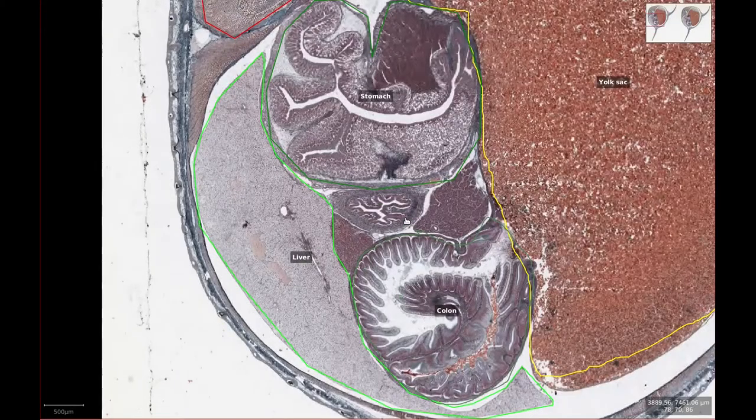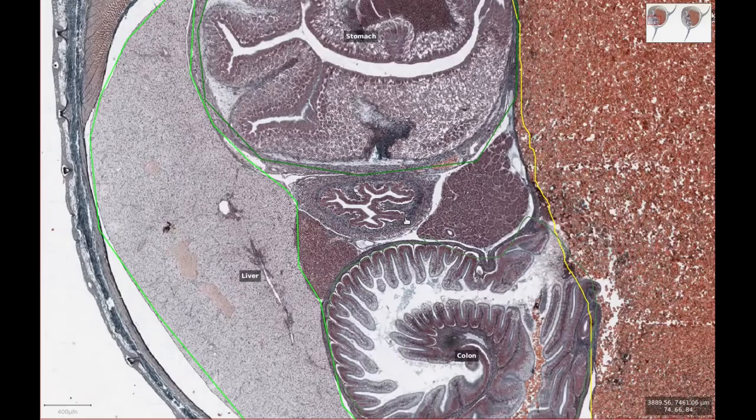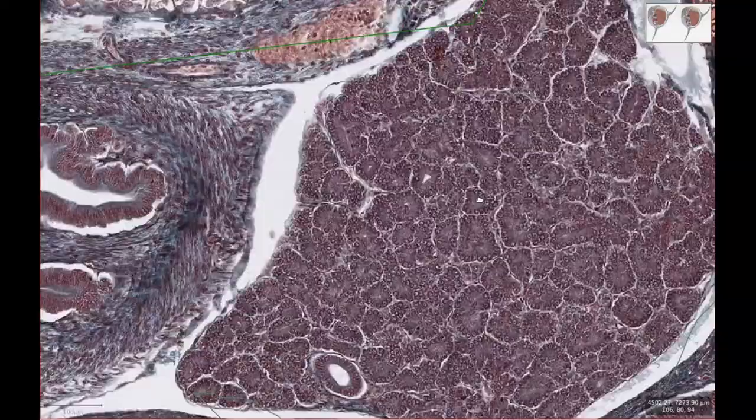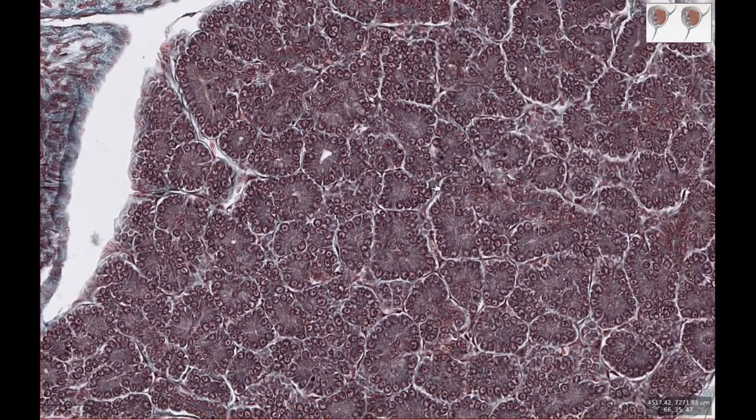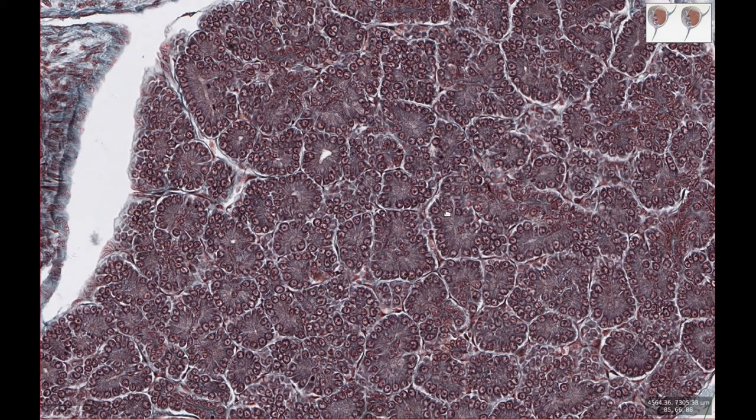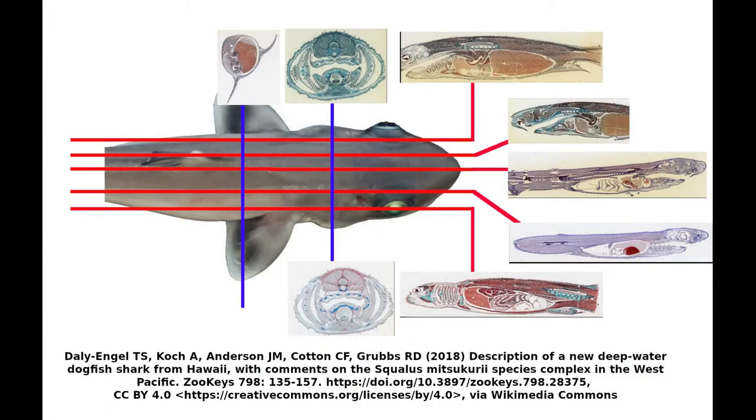Between the stomach and colon there is a round section of intestine, and next to that there is a section of glandular tissue which is likely to represent pancreas. This picture summarizes where each section is likely to have come from, given the organs we can see on each slide.